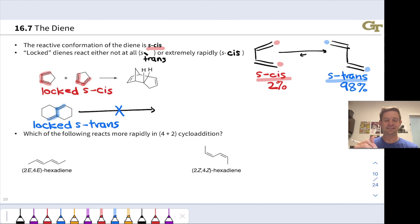And this is good evidence that the S-cis conformation is the reactive conformation in this reaction. So at the bottom of the slide here, we have a question. Which of the following reacts more rapidly in 4-plus-2 cycloaddition? And we've got two butadienes with some additional substituents on the end.